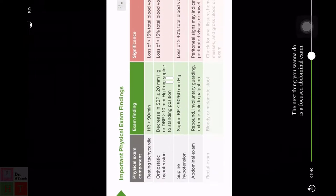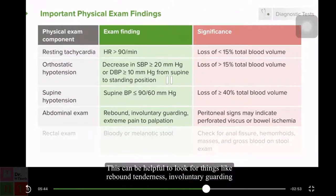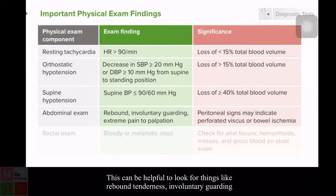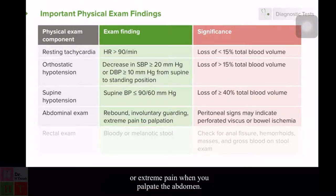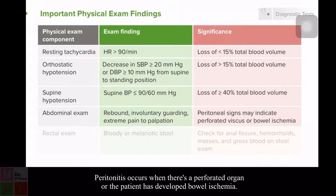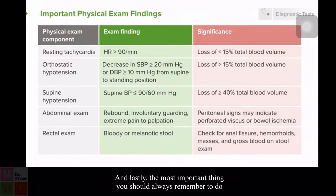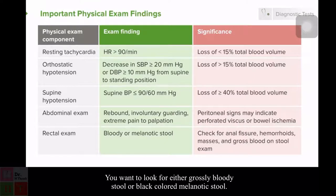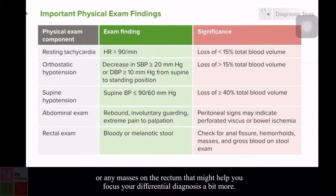The next step is a focused abdominal exam. This can be helpful to look for things like rebound tenderness, involuntary guarding, or extreme pain when you palpate the abdomen — signs of peritonitis, which occurs when there is a perforated organ or the patient has developed bowel ischemia. Lastly, and most importantly, always remember to perform a rectal exam. Look for either grossly bloody stool or black melanotic stool, and also check for anal fissures, hemorrhoids, or any rectal masses to help focus your differential diagnosis.